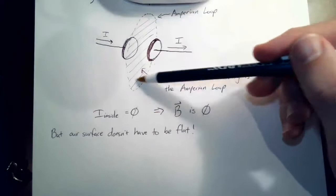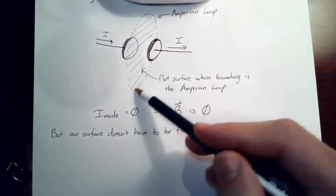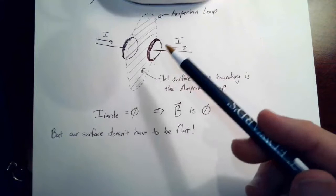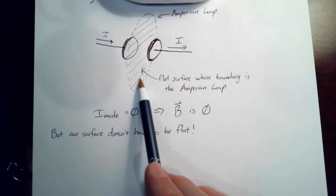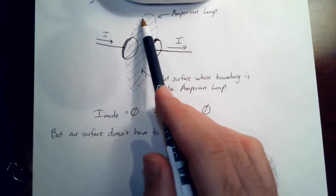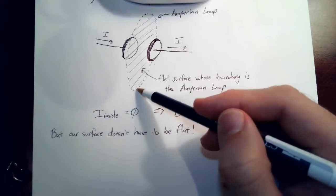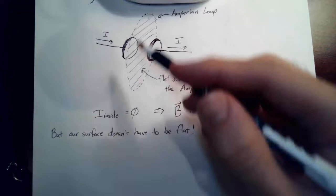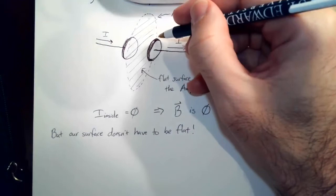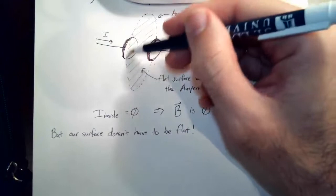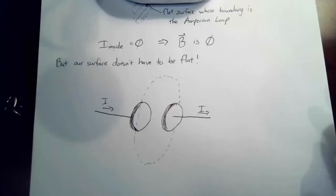A straightforward application of Ampere's law gives us that the magnetic field is zero outside of this parallel plate capacitor. But the surface connecting to the loop doesn't have to be flat — I can stretch it like a soap bubble wherever I want, as long as it has this loop as its boundary. For example, I could draw a basket-shaped surface where the rim is the Amperian loop. It's a mathematical theorem that the shape of the surface doesn't matter.